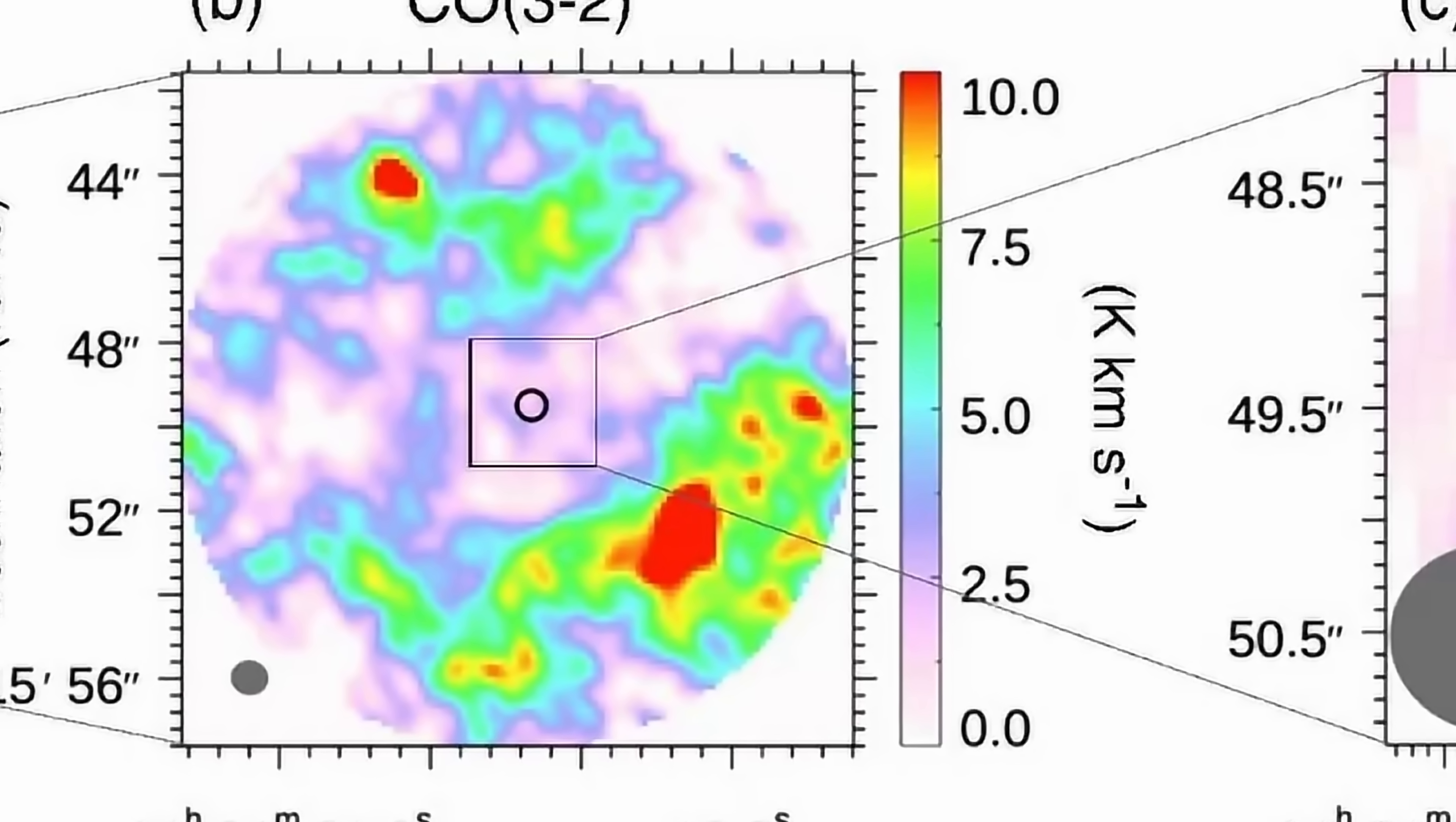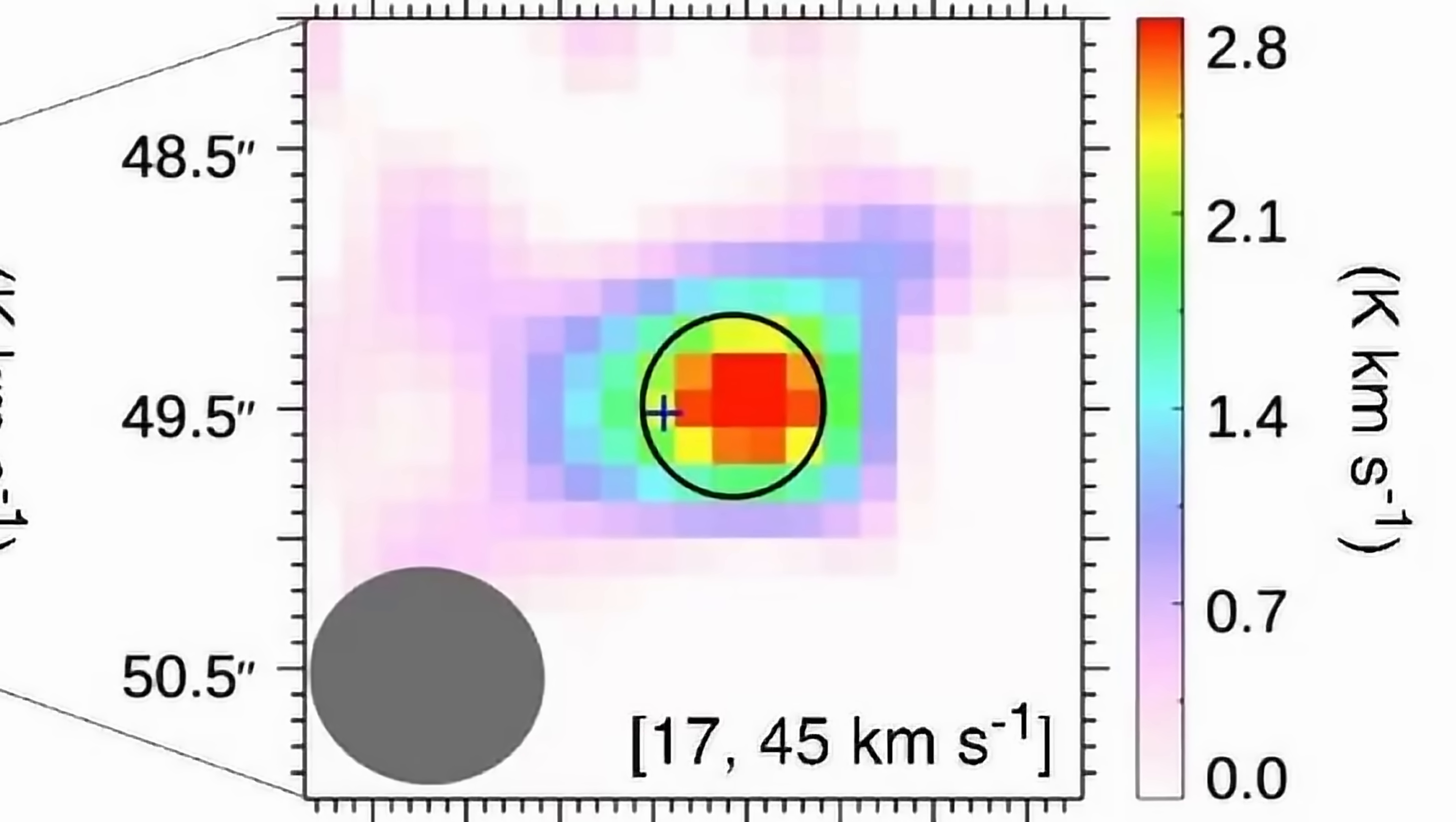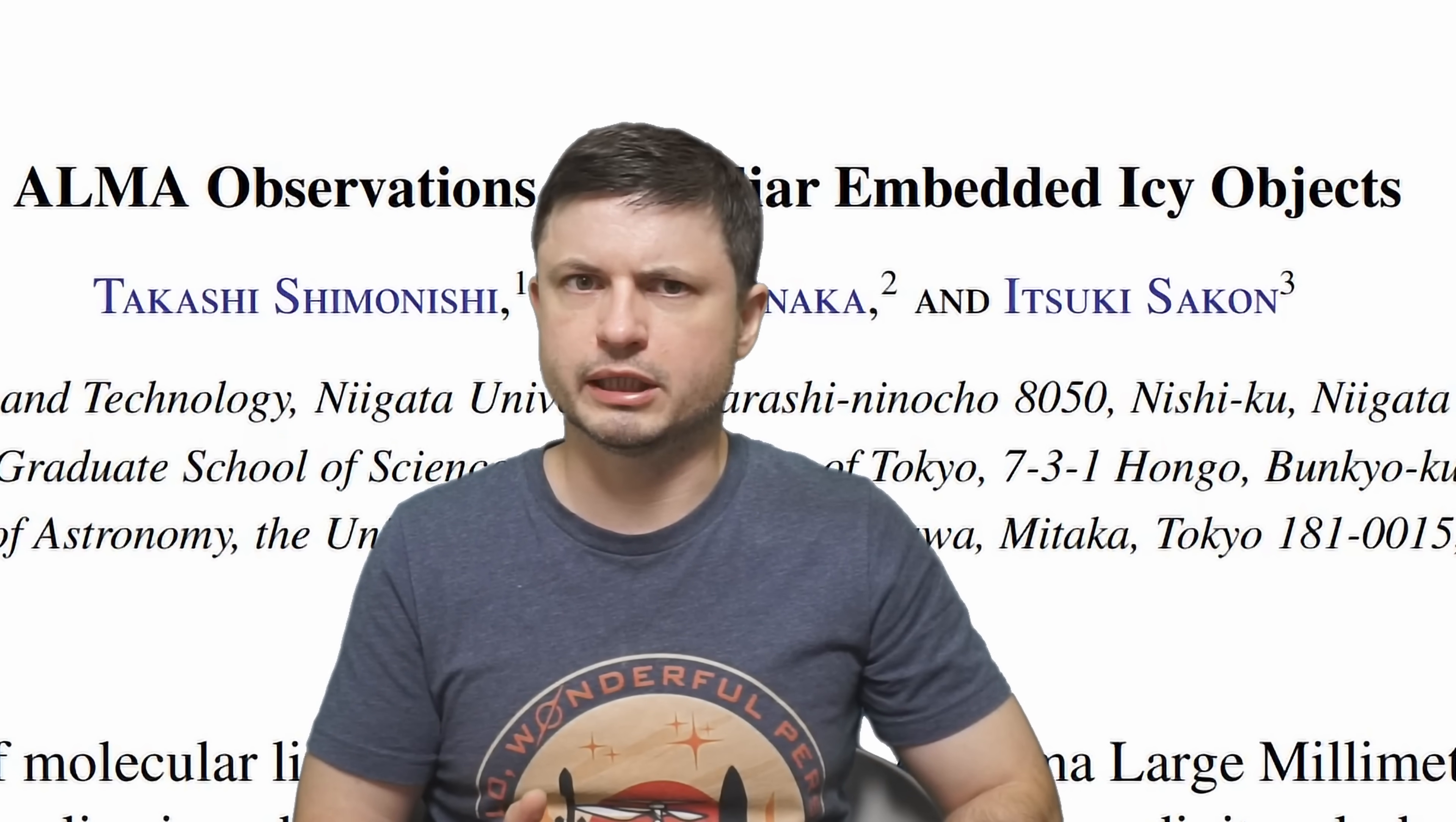Because it looked like nothing we've seen before. It appeared to be either some kind of a really dense gas cloud, maybe some kind of a young star, or maybe something else entirely, but it also appeared to be essentially some kind of an icy object with something relatively bright and something relatively hot in the center. And so right now they're just called peculiar embedded icy objects. PEIO, I guess.